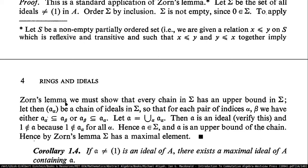Let's get back to our stuff. Every chain in the partial order set has an upper bound in sigma. You have this chain of ideals a_alpha, such that for each pair of indices alpha, beta, either a_alpha is included within a_beta or a_beta is included within a_alpha. If you take A to be the union of all these ideals, then A is an ideal.